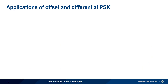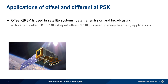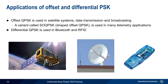There are a number of applications that use offset and differential PSK. Offset QPSK is most often found in satellite systems due to its spectral efficiency and constant power envelope, although it's often used for other types of data transmission and broadcasting. A special variant of offset QPSK, called Shaped Offset QPSK, or SOQPSK, is used in many telemetry applications. A well-known application of differential PSK is Bluetooth, and DPSK is also used in some RFID applications as well.